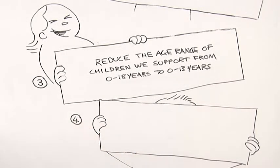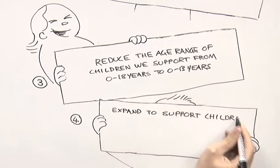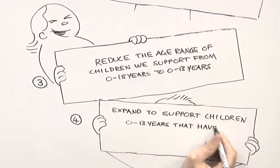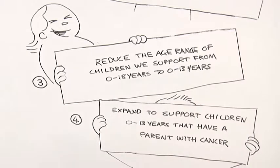And finally, we will expand to support children 0 to 13 years that have a parent with cancer, because although their needs are similar to the needs of children who have a brother or sister with cancer, there is currently no national organisation providing them support.